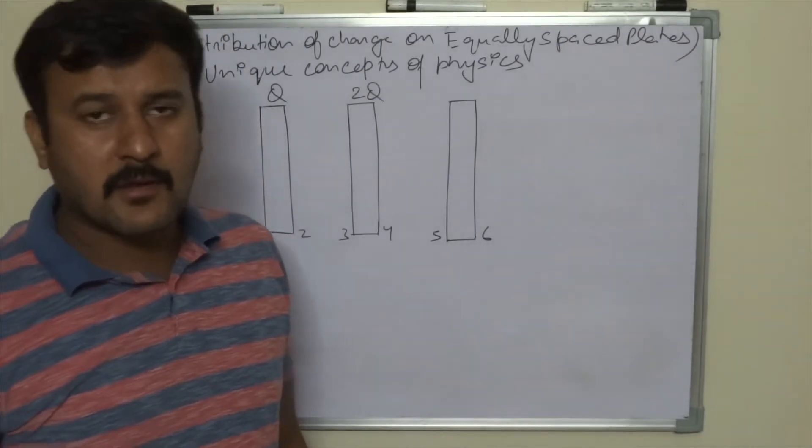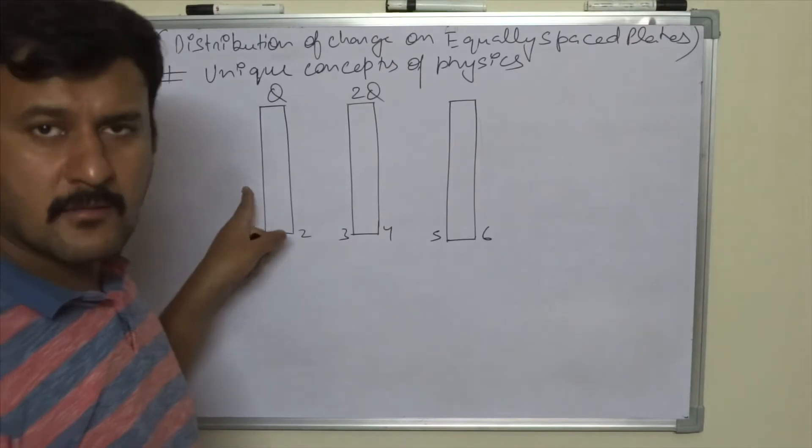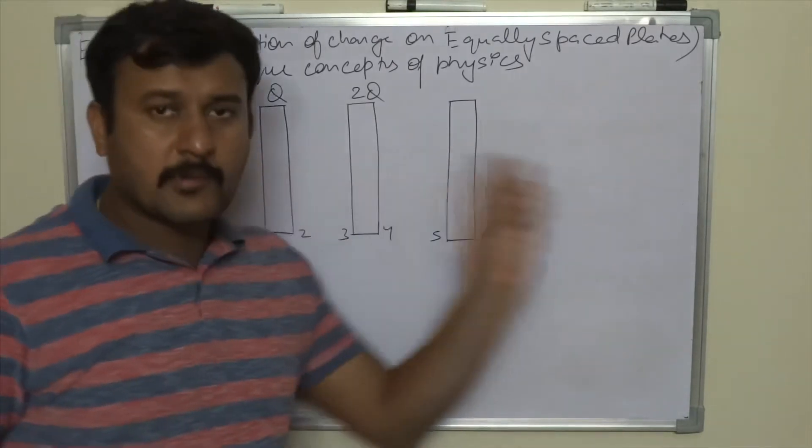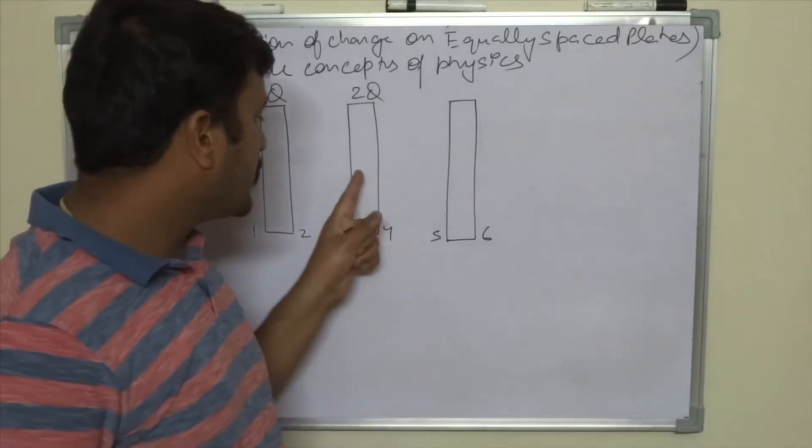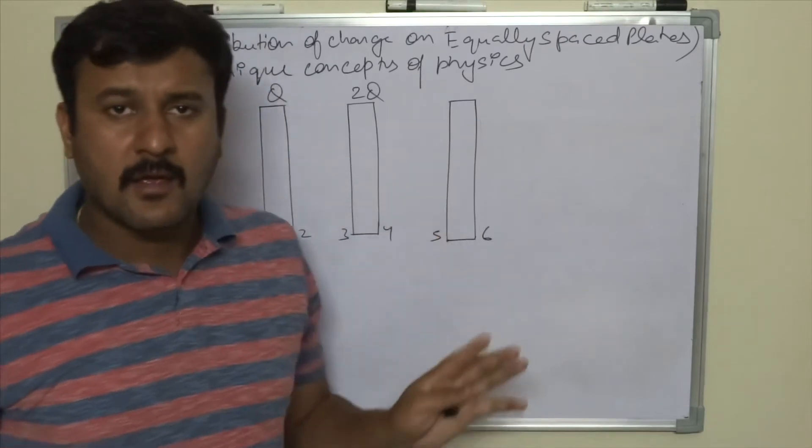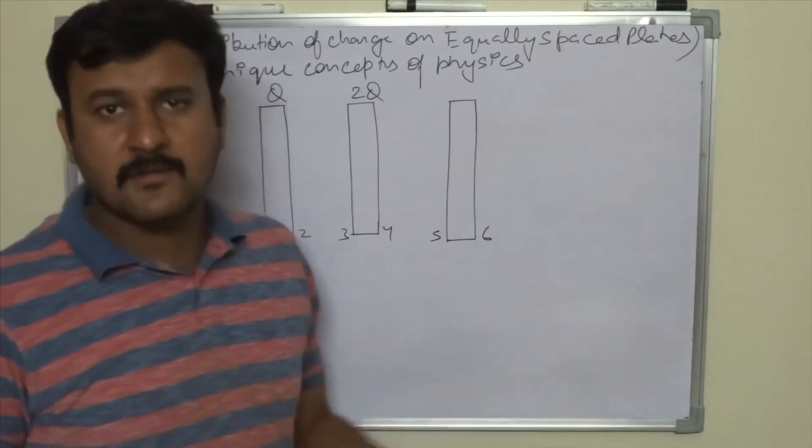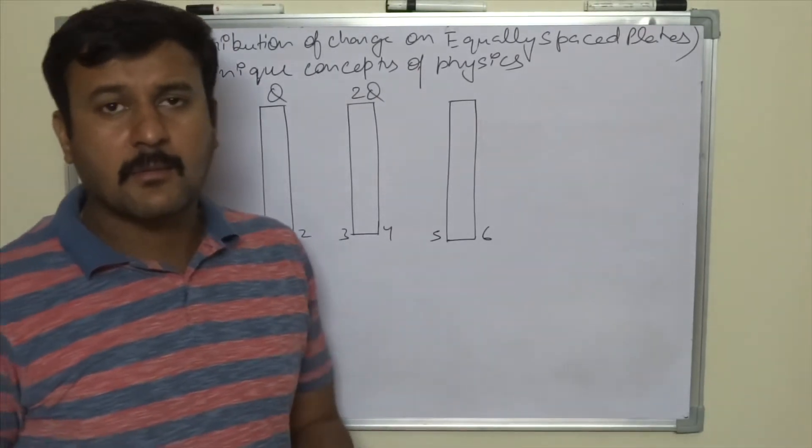The lengthier method we all know: we have to assume any charge on this plate, any variable, and distribute the charge on other surfaces accordingly. We have to choose any point inside any plate and cancel out the field at that point. This is the lengthier method.